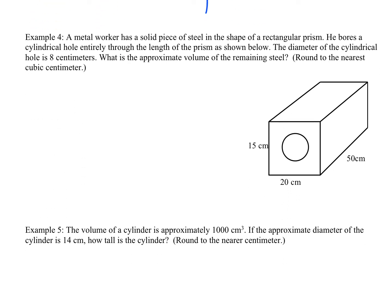For number 4, a metalworker has a solid piece of steel in the shape of a rectangular prism. He bores — meaning drills — a cylindrical hole entirely through the length of the prism. The diameter of the cylindrical hole is 8 centimeters, so the radius is 4. To find the approximate volume of the remaining steel, I need to find the volume of the prism, subtract the volume of the cylinder.